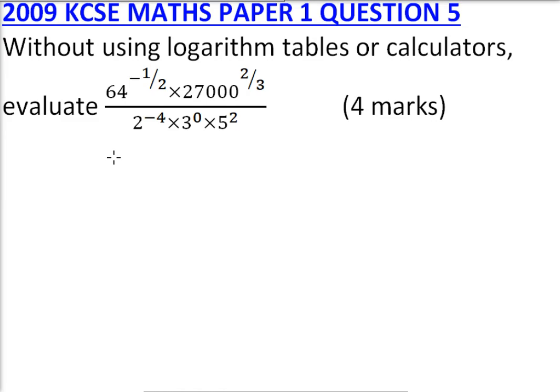We start by writing, we can write, 64 is the same as 8 squared. When you open the bracket, you multiply by a half.